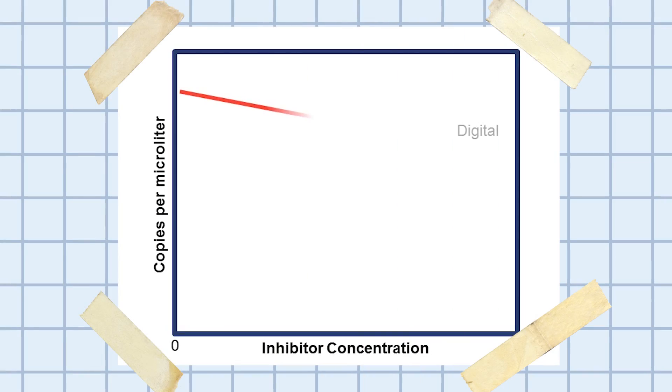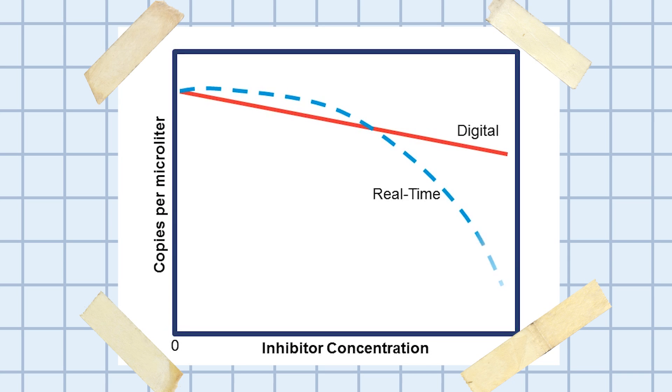Digital PCR is highly tolerant to PCR inhibitors by virtue of the massive partitioning we just discussed. These data illustrate how digital PCR is robust in the face of increasing inhibitor concentrations, whereas the performance with real-time PCR dramatically drops off at high inhibitor concentrations.